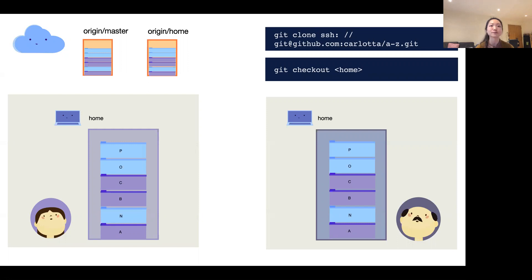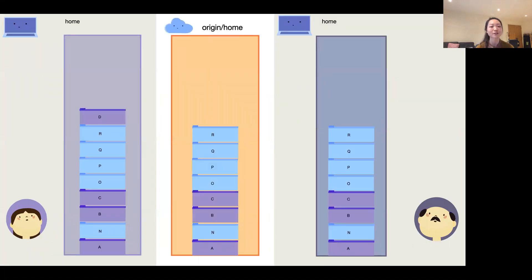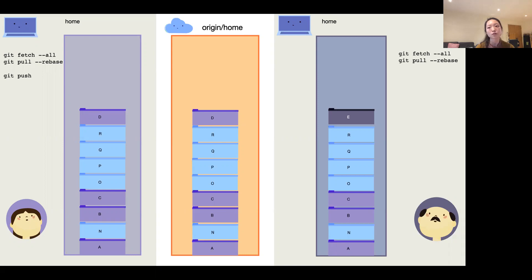Looking at this example: Carlotta has the master branch, so the new branch is branched out from master. Her local branches now have the home branch, and if she publishes it, the remote will have a copy of her local home branch. Father needs to first 'git clone' from Carlotta's repository — he'll be automatically on the default branch (master), but if he does 'git checkout' or switches from the UI, he'll have the home branch. Now both of them are on the home branch and can start working without disturbing Pablo.